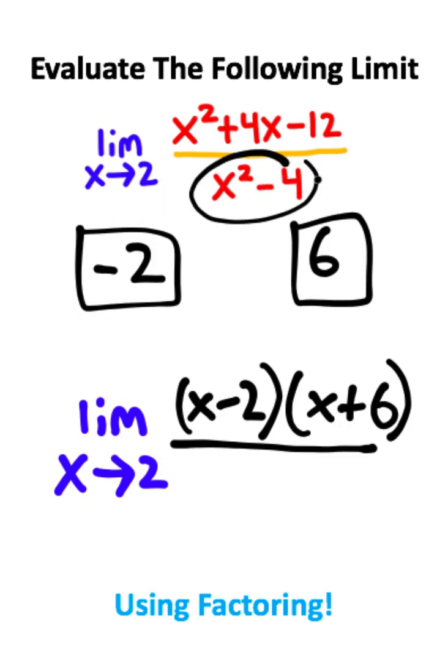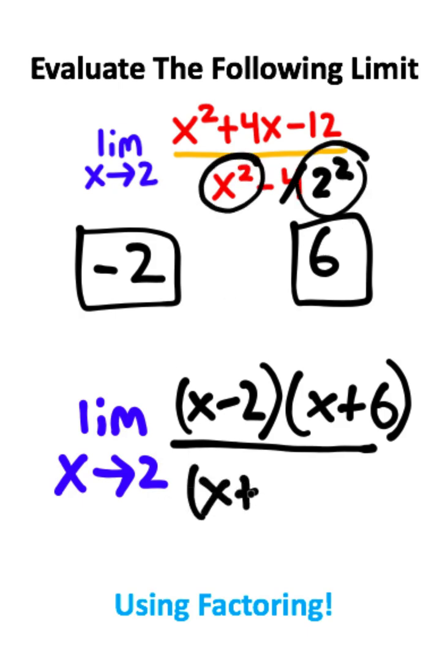Now another thing I notice is the bottom of this fraction. x squared minus 4 is the same thing as x minus 2 squared. And this is a difference between two squares. So we can write this as x plus 2 times x minus 2 because this is a shortcut for factoring a difference of two squares.